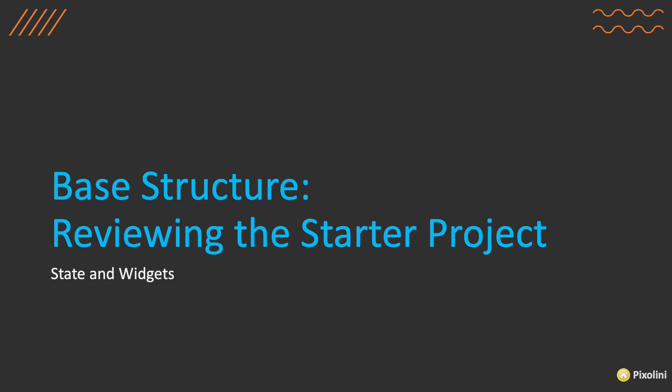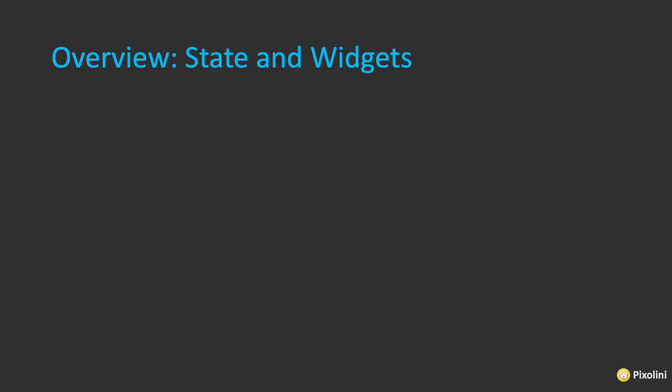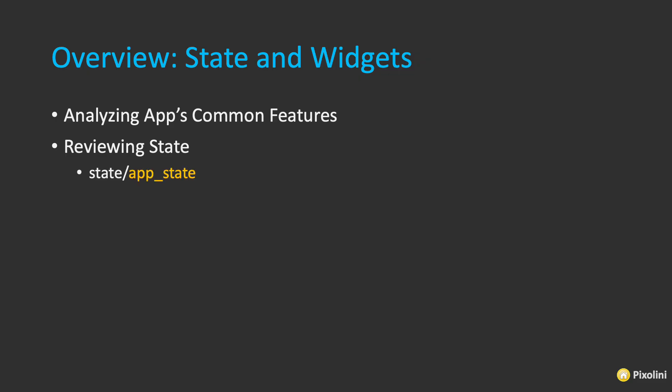Let's continue to review the base structure, and we're going to look at the state and widgets. We're going to analyze the application's common features. We're going to review the app state — a global app state for the application. The application state notifier notifies any children of any event so that it updates the particular layout.